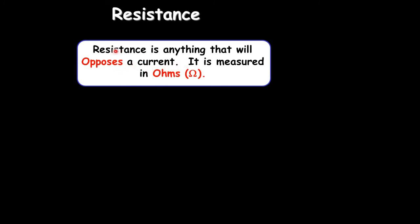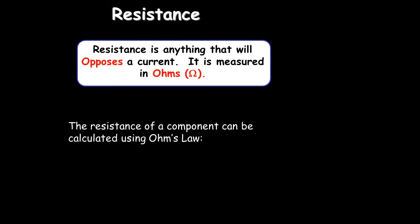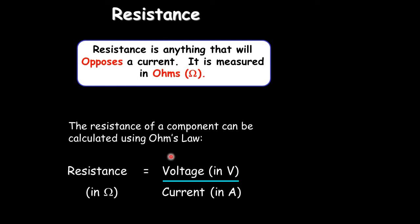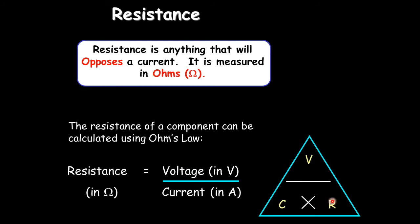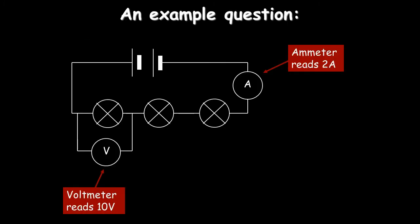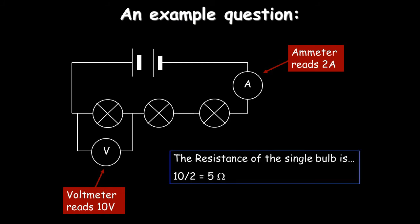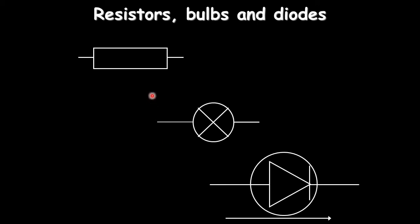Resistance opposes current — higher resistance means less current, measured in ohms. Ohm's law: resistance equals voltage divided by current (V = IR). Remember it as VCR. Make sure units are correct. Example: if the voltmeter reads 10 volts and current is 2 amps, resistance of the bulb is 10 ÷ 2 = 5 ohms. Three more identical 5-ohm resistors in series gives a total resistance of 15 ohms.